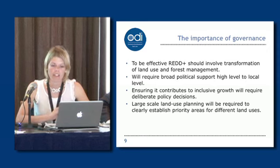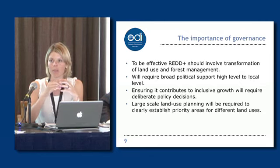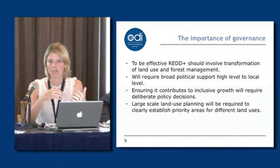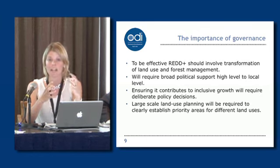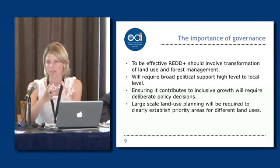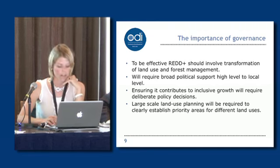A final and absolutely key point is that really strategic land use planning will be needed to work out areas that are high priority for agriculture, high priority for nature conservation which may involve REDD payments to make that more economically viable, and other areas for urban growth. Large-scale land use planning will be essential if REDD is actually going to work on a long-term basis.